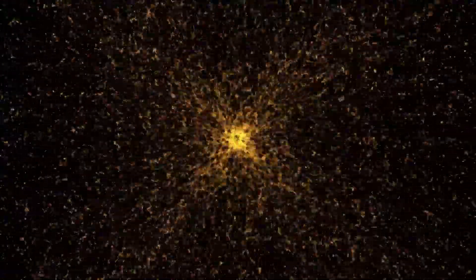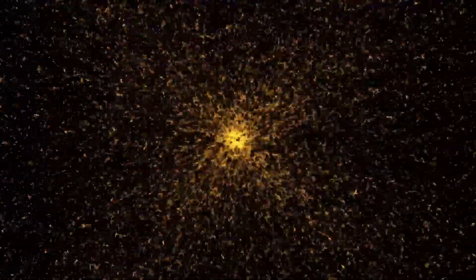If 3I Atlas truly emerged from the frontier between the thin and thick disks, then its existence is more than astronomical coincidence. It is a direct sample of an older Milky Way. That region is often described as a transitional membrane in galactic evolution, where two populations of stars overlap in both age and motion.